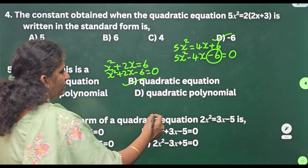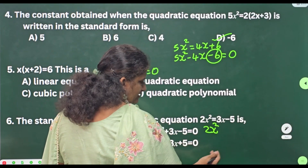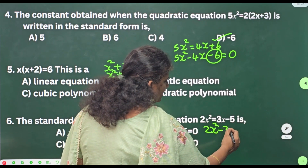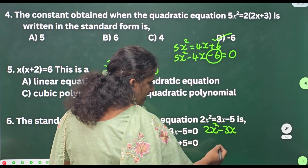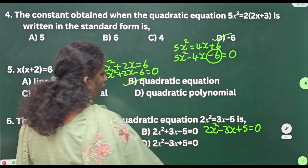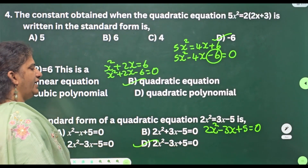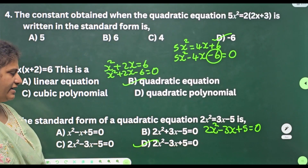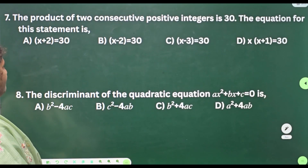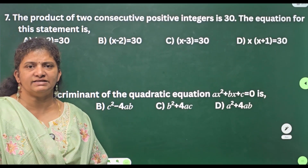Sixth one: the standard form of the quadratic equation 2x² = 3x − 5 is — write in the form of standard form. That means 2x² — transpose these terms to this side: +3x becomes −3x, −5 becomes +5, equal to 0. What is this answer? Option D: 2x² − 3x + 5 = 0.